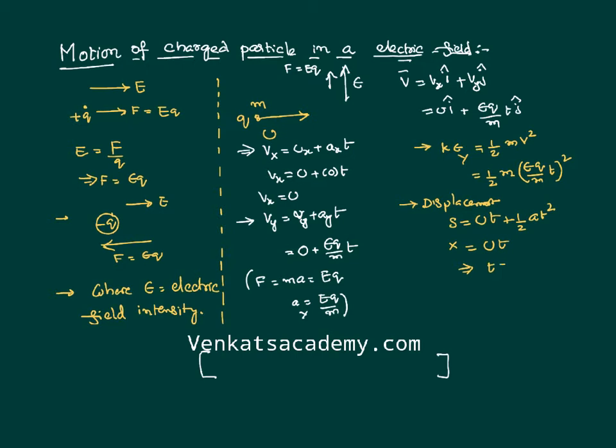From displacement along X, if required, I can write T equals X by U. Displacement along the Y axis, using the formula UY times T plus half AY times T squared. Of course, UY is 0, and AY is EQ by M times T squared.